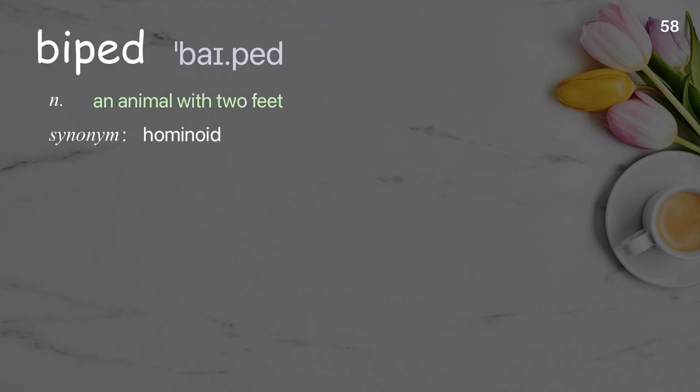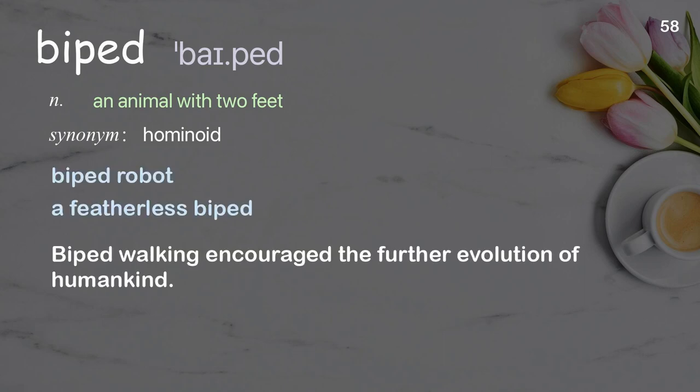Biped: an animal with two feet. Examples: biped robot, a featherless biped. Biped walking encouraged the further evolution of humankind.